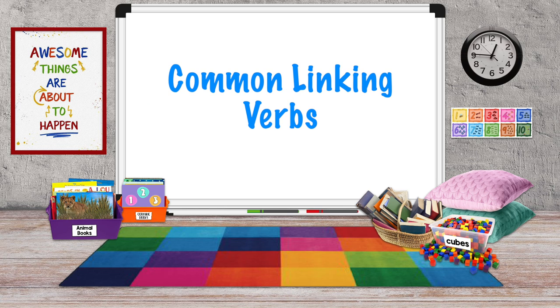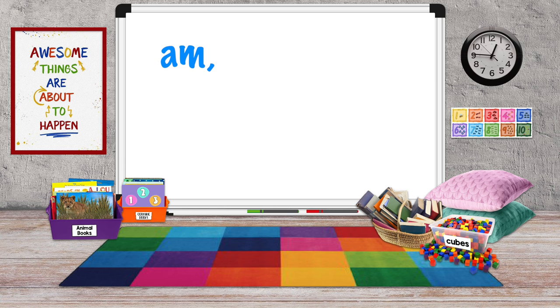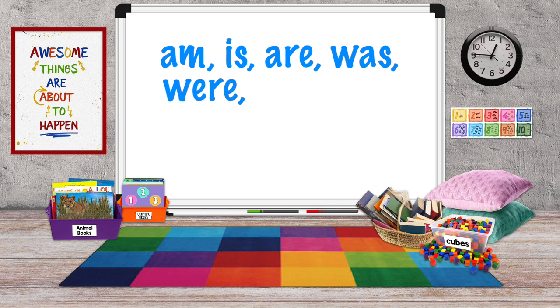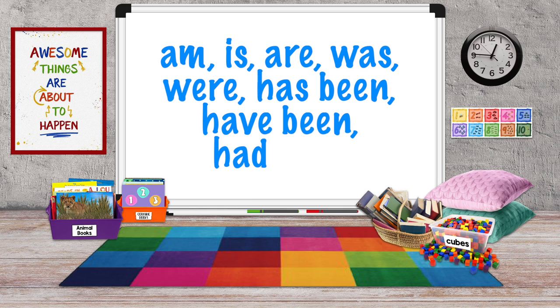A few common linking verbs are am, is, are, was, were, has been, have been, and had been. There are a lot more, and we'll look at those later.